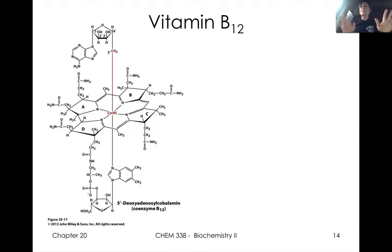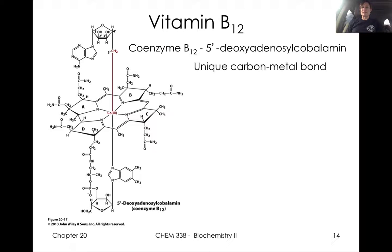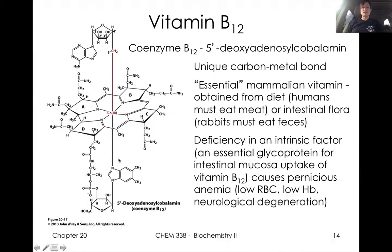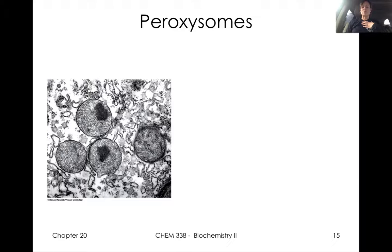I'll mention just briefly our last B vitamin we're going to talk about, which is vitamin B12, also called cobalamin. It's an essential mammalian vitamin we get from our diet. It's very unique in that it's one of the only things in the human body that has a metal-carbon bond. So just some interesting things to think about with vitamin B12.